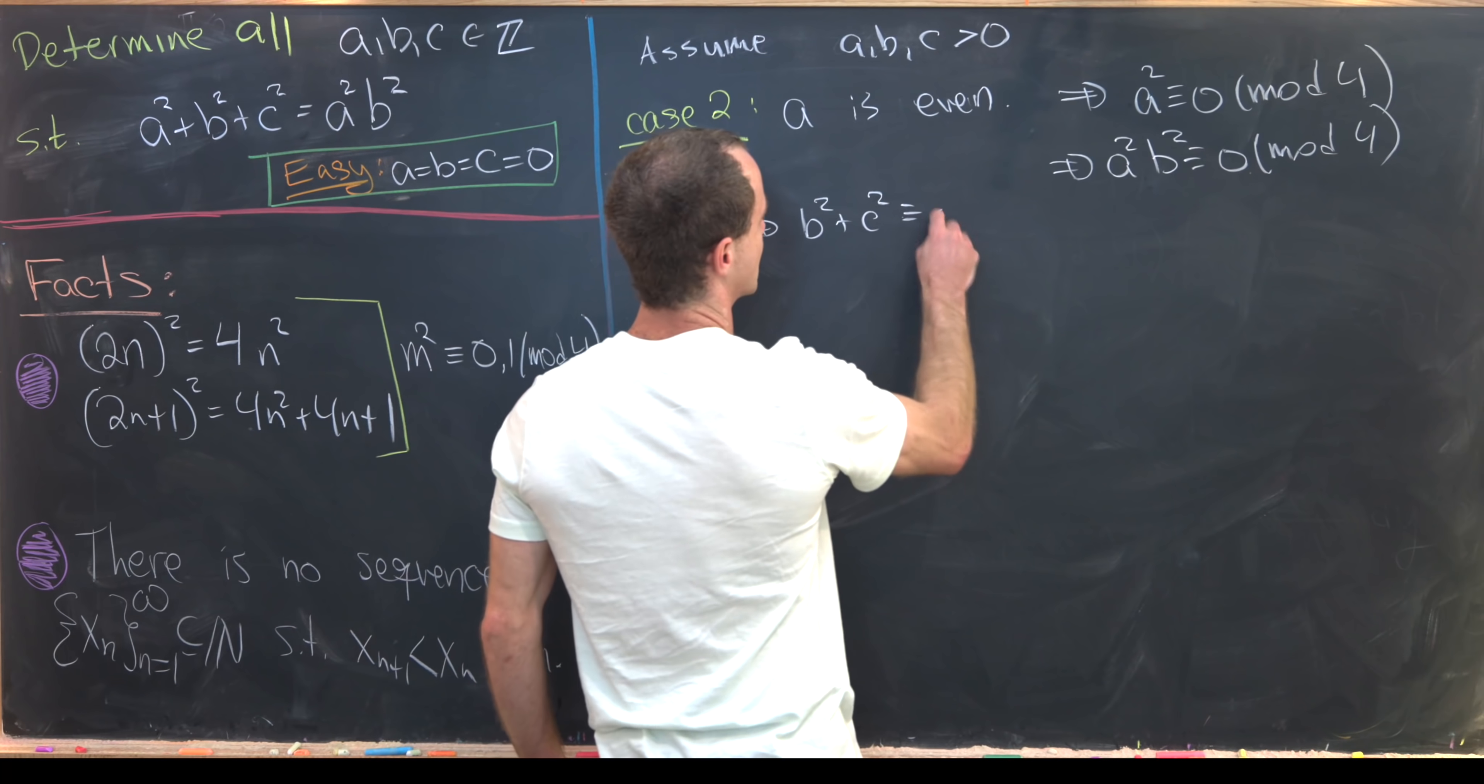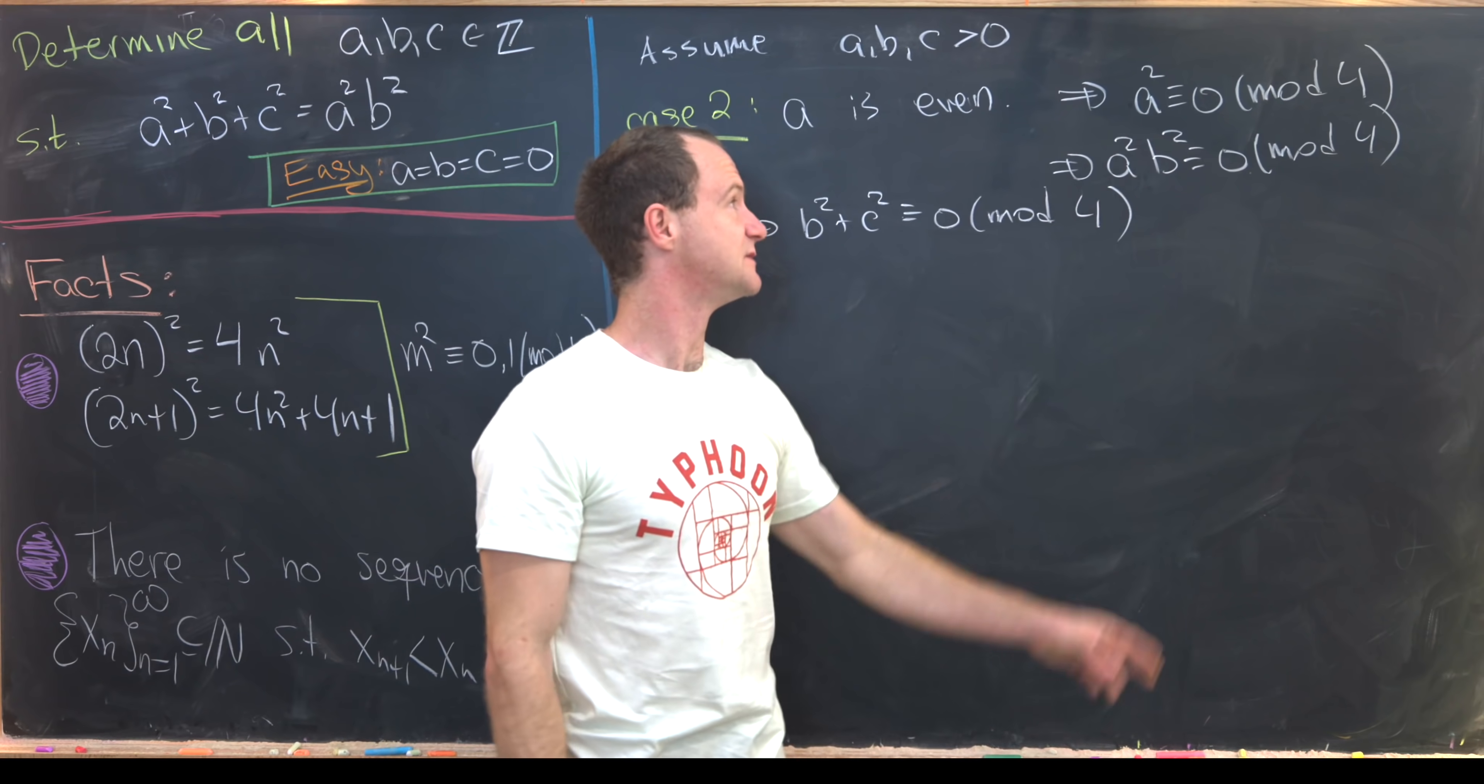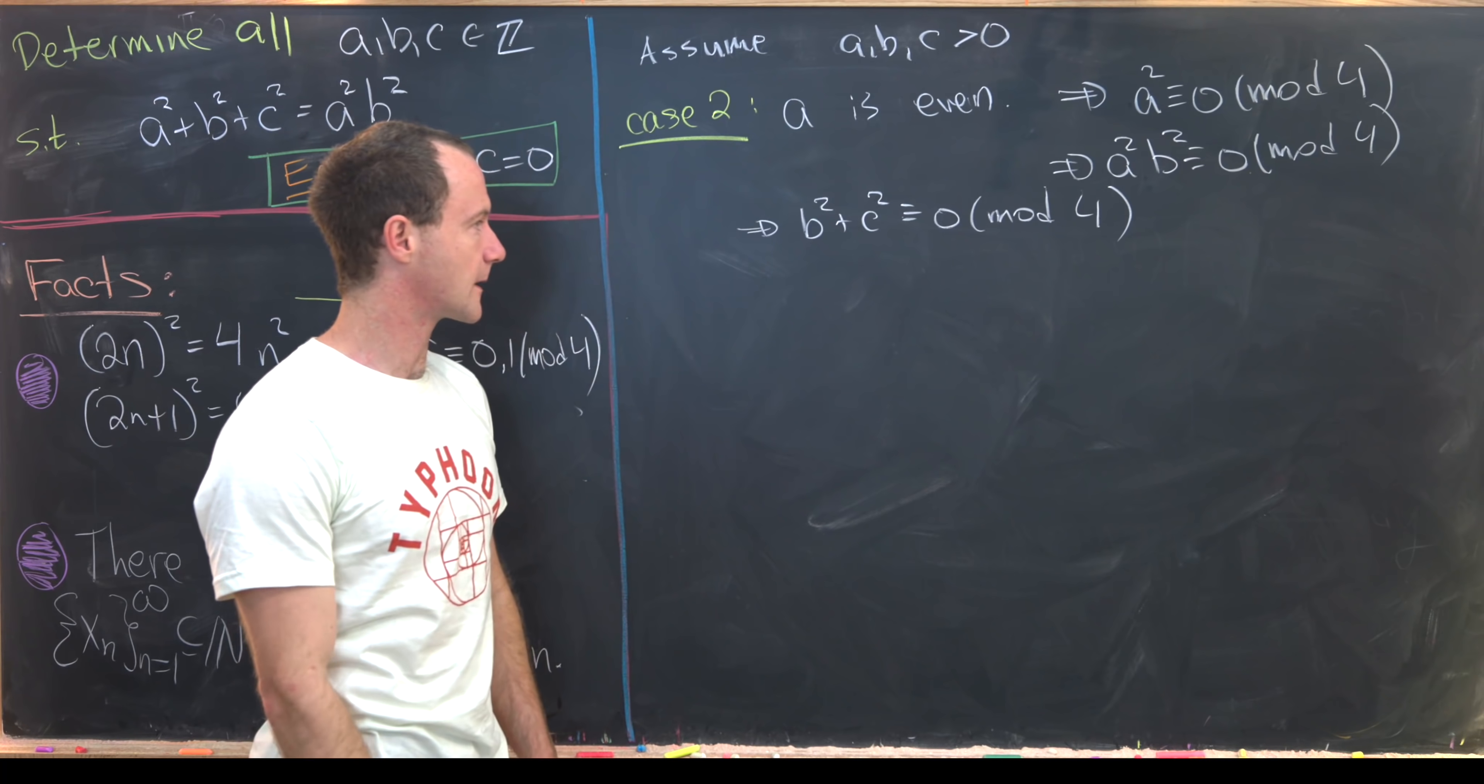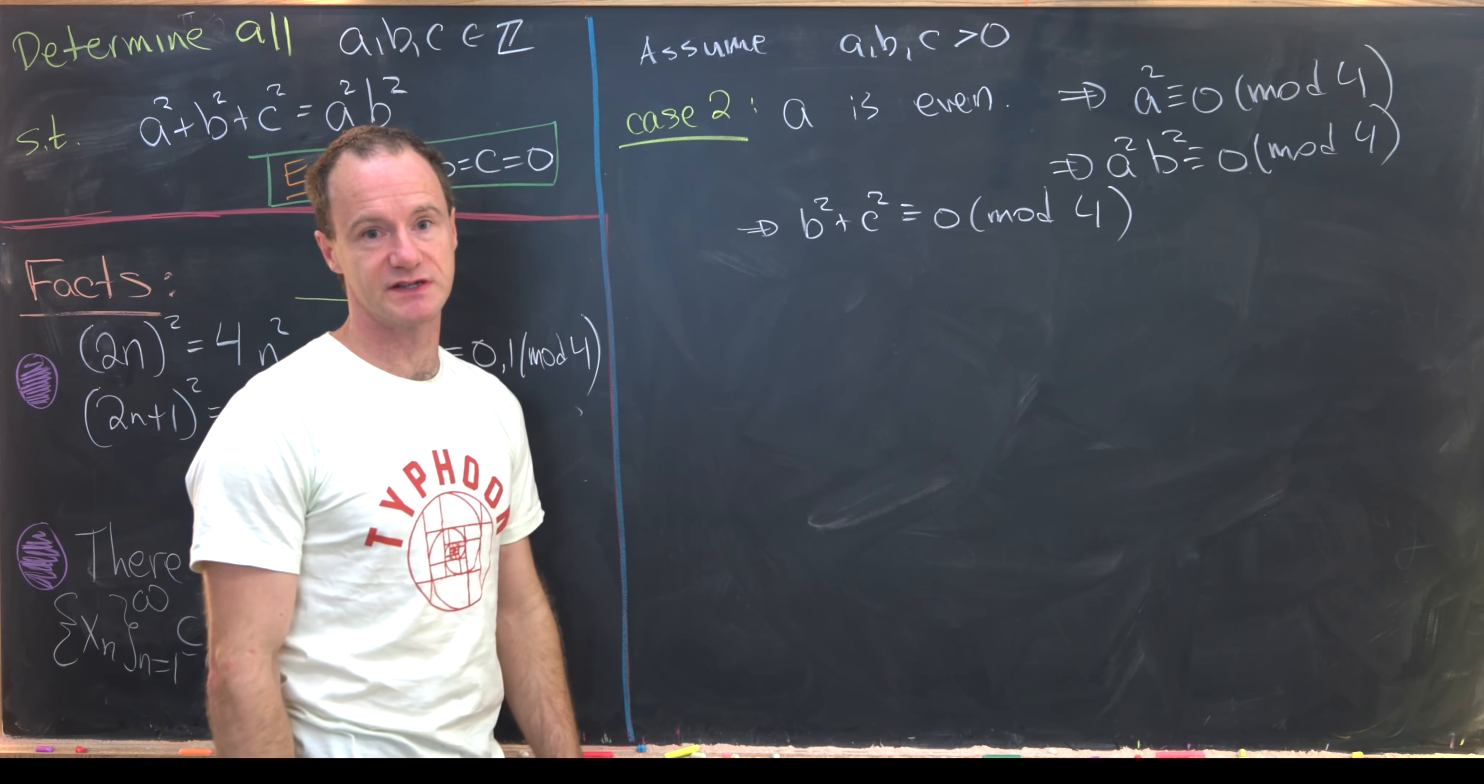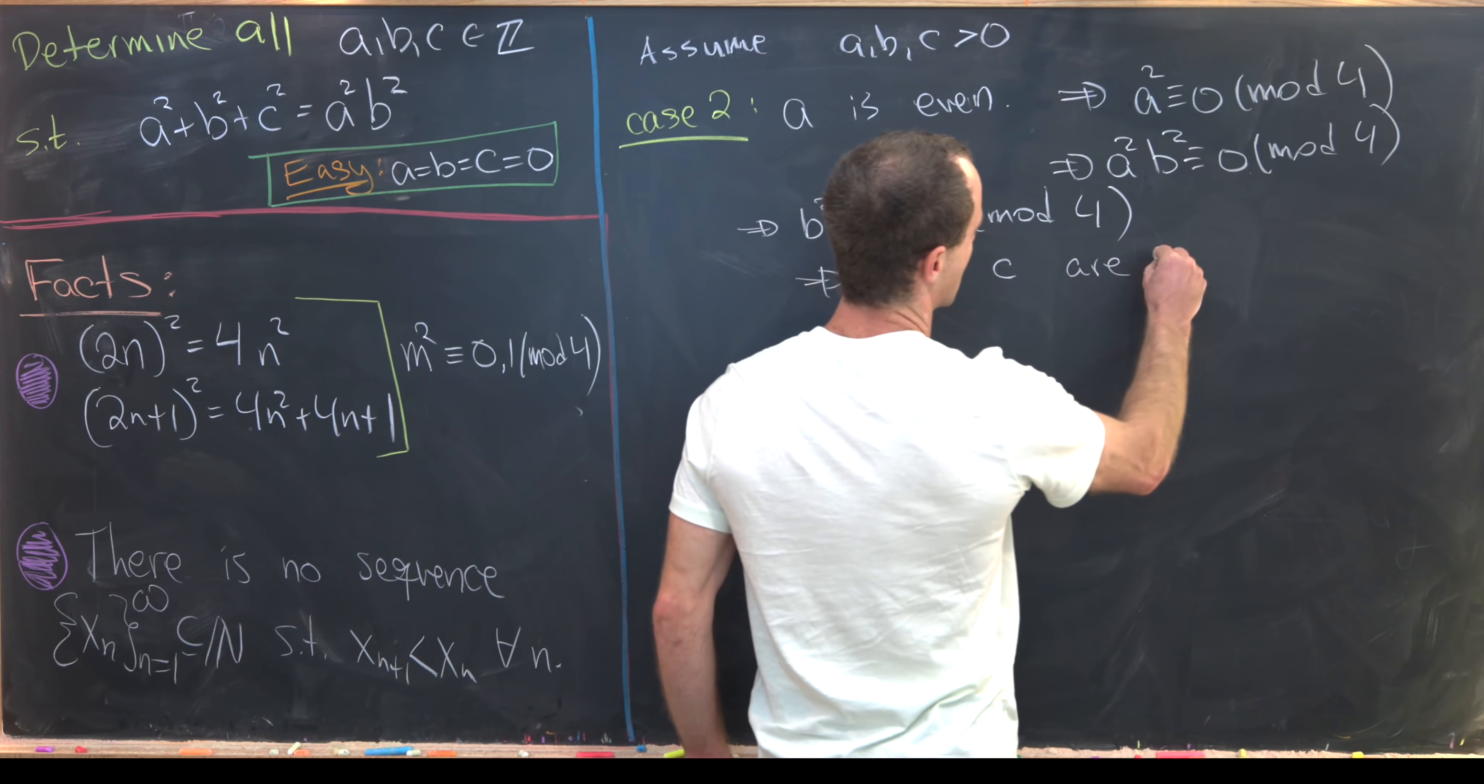But now putting these two things together along with our equation which is satisfied, that tells us that b² + c² must be congruent to 0 mod 4. Again, because a²b² and a² are both 0 mod 4, just plugging that in here but then reducing mod 4.